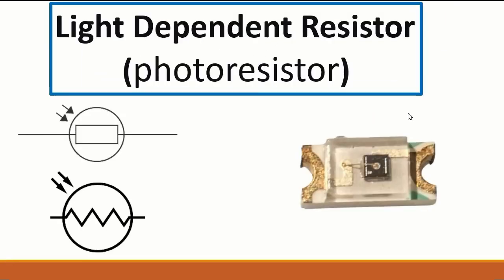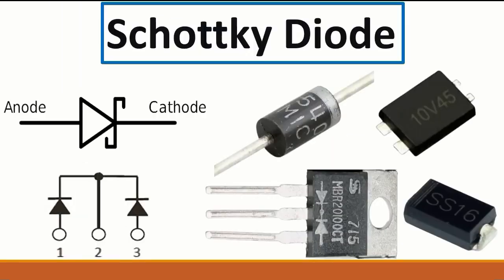Next we have the light dependent resistor, also called the photo resistor. Its symbol is a little different from an LED — the LED emits light, while the photo resistor senses light. Notice that the arrows on the photo resistor symbol point inward, indicating it receives light.